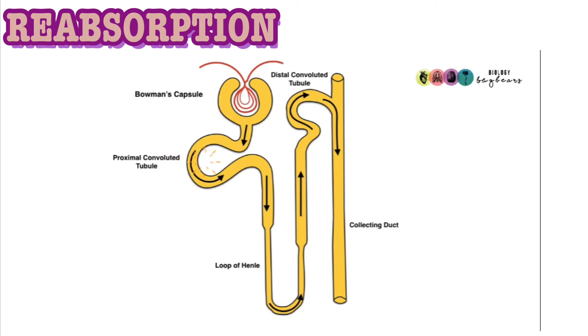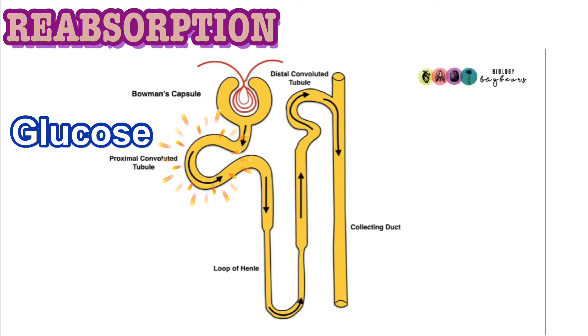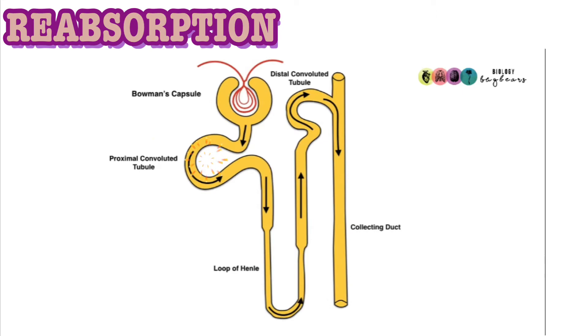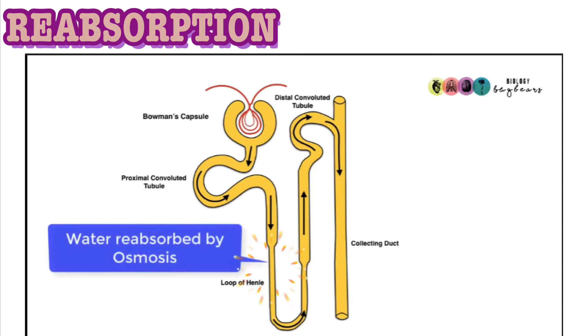The second stage is reabsorption. Remember that not all materials are waste — they need to be reabsorbed and taken back to the bloodstream. Most reabsorption takes place in the proximal convoluted tubule. Once the glomerular filtrate passes through the proximal convoluted tubule, we're talking about the fine-tuning reabsorption of water and salt. All glucose gets reabsorbed in the proximal convoluted tubule by a combination of active transport and diffusion. Most salts are reabsorbed through active transport or diffusion as well. All amino acids are reabsorbed mostly by active transport. Water is reabsorbed through osmosis. As the glomerular filtrate goes to the loop of Henle, only water is reabsorbed, and it is through osmosis.